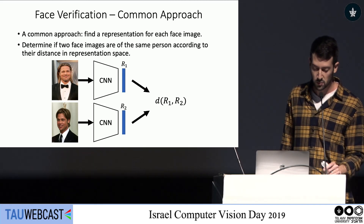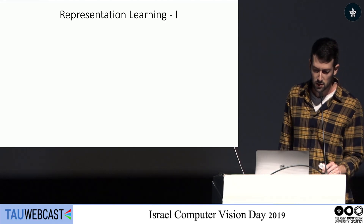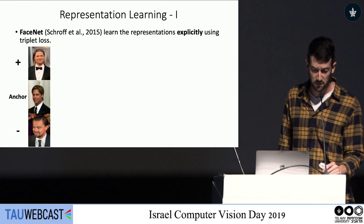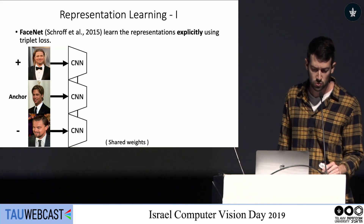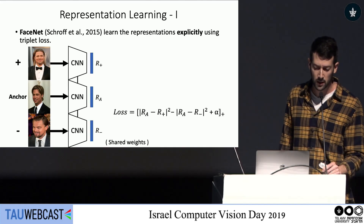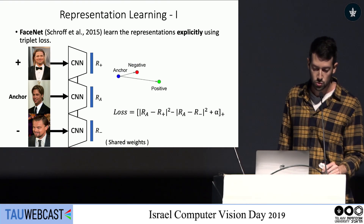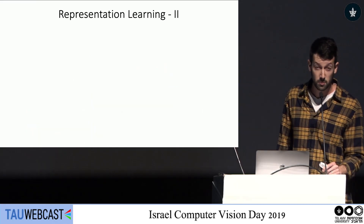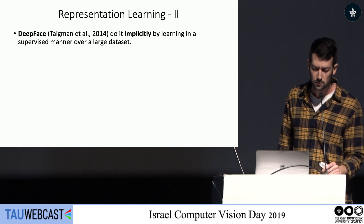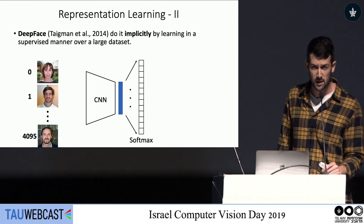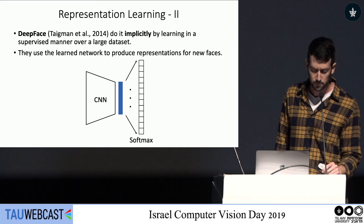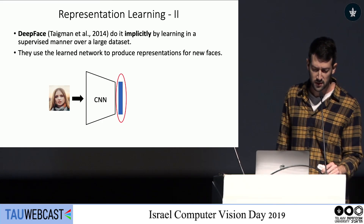A common approach for face verification is to find a representation for each facial image, then determine if two faces are of the same person according to the distance in representation space. These representations can be learned explicitly using a triplet loss, as in FaceNet — passing triplets through networks with shared weights and optimizing to bring positive examples closer while pushing negative ones further apart. They can also be learned implicitly, as in DeepFace, by training a classification network over a large facial dataset and using the last hidden layer representation for unseen identities.